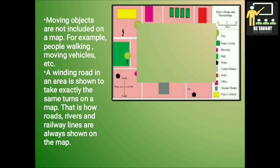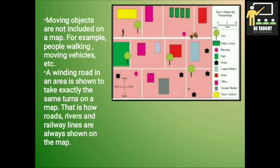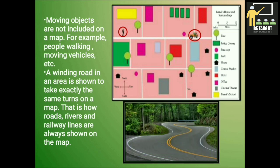Moving objects are not included on a map — for example, people walking, moving vehicles, etc. A winding road in an area is shown to take exactly the same turns on a map. That is how roads, rivers and railway lines are always shown on the map. A winding road means a road which has a lot of turns, as you can see in the picture.